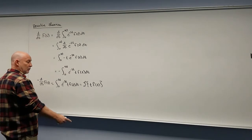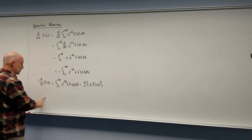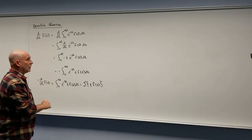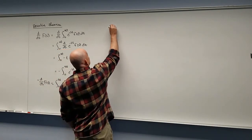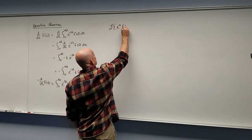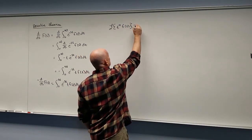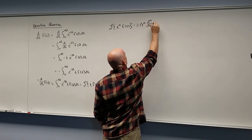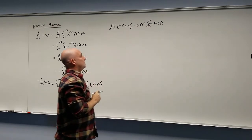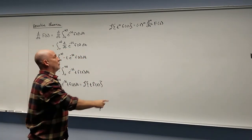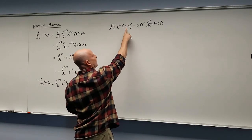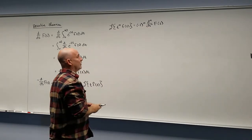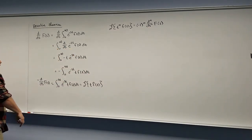So, except for a negative, taking the derivative in the S world is multiplying by T in the T world. The way we normally use this is actually backwards: if we multiply by T in the T world, that corresponds to derivatives in the S world. You can do this several times, and each time you do it, you get another negative. So the generic rule is: the Laplace transform of t^n · f(t) equals negative one to the n, times the nth derivative with respect to S of big F(S).